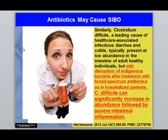C. diff infections are a big problem — they cause diarrhea, and too much diarrhea can put you in the emergency room because if you lose electrolytes, you can lose your life. C. diff becomes more aggressive when someone takes antibiotics. With disruption of indigenous bacteria after treatment with broad-spectrum antibiotics, C. diff can significantly increase in abundance, followed by severe intestinal inflammation. This is the latest peer-reviewed literature telling us that antibiotics cause SIBO.